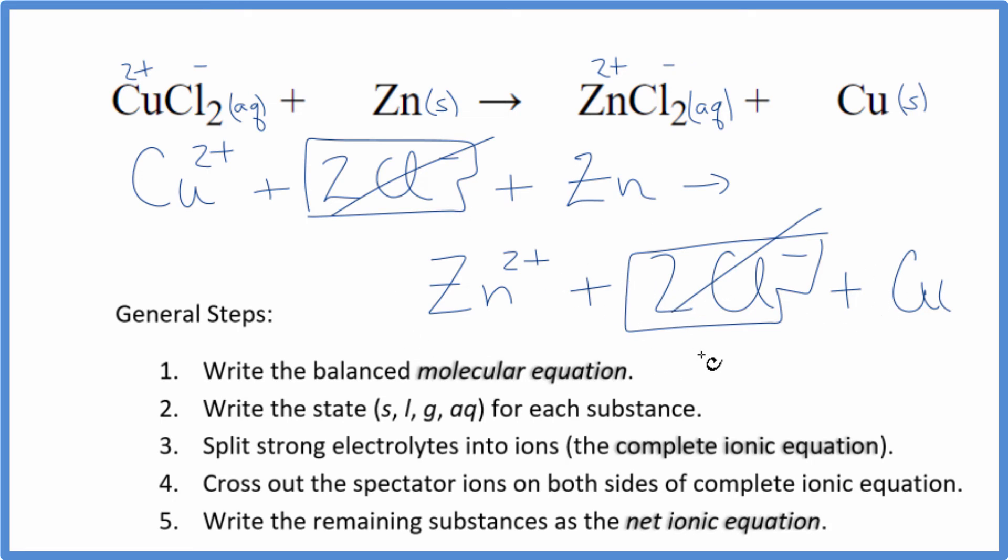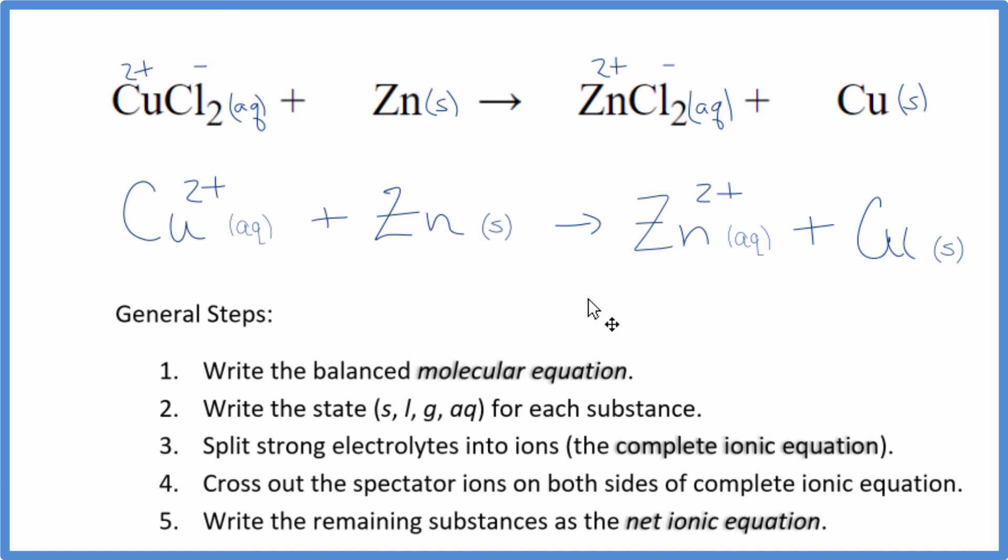So that makes this the net ionic equation for CuCl2 plus Zn. I'll clean it up and write the states, and we'll have our net ionic equation. So this is the balanced net ionic equation for CuCl2 plus Zn.